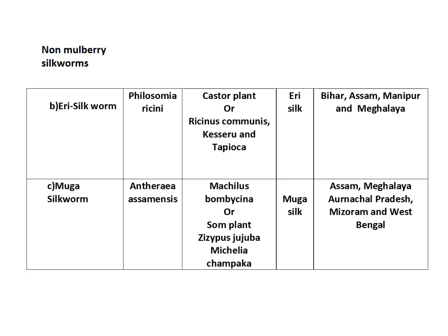Muga silkworm: the scientific name is Antheraea assamensis. It feeds on food plants such as Machilus bombicina, Ziziphus jujuba, and Michelia champaca. The silk produced is called Muga silk. Muga silkworms are found distributed in Assam, Meghalaya, Arunachal Pradesh, Mizoram, and West Bengal.